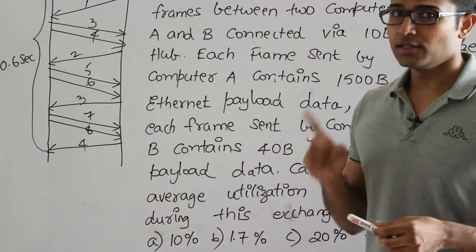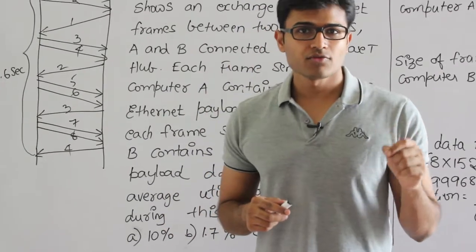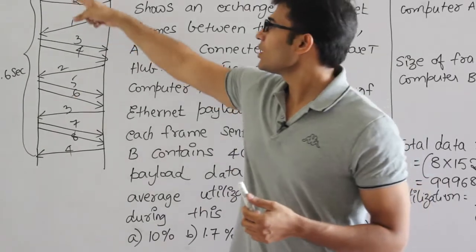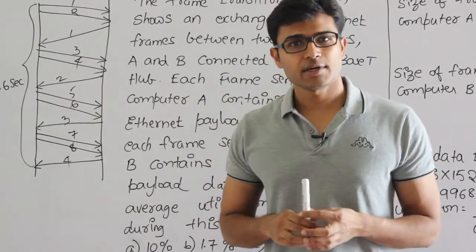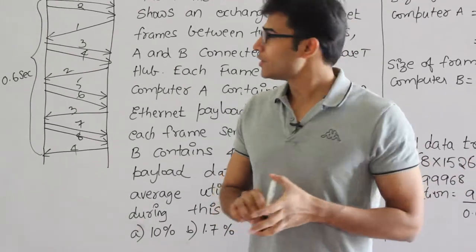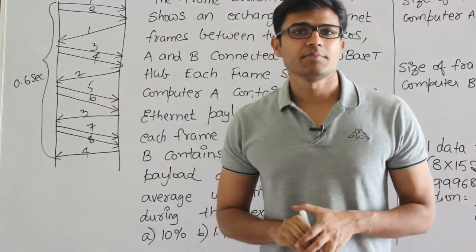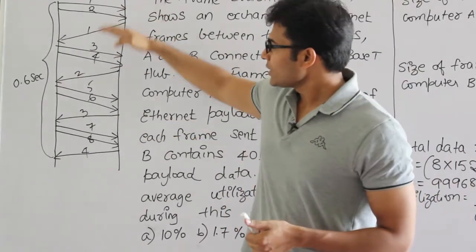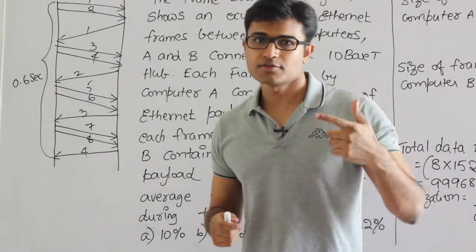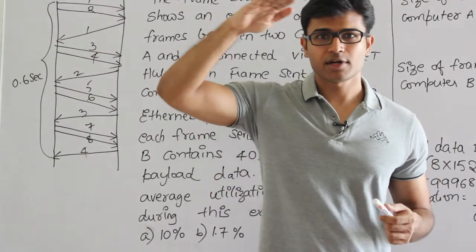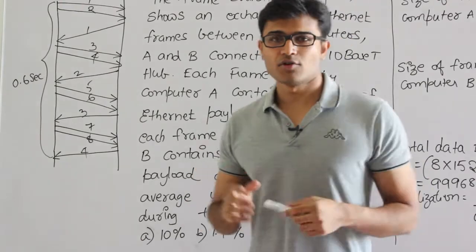The question doesn't mention any collisions, so assume there are no collisions and no time is wasted. There is also no mention of inter-frame delay. The total overall time to exchange all 12 frames (8 plus 4) is 0.6 seconds. Utilization is the actual data transferred divided by the maximum data we could have transferred by using the bandwidth continuously.